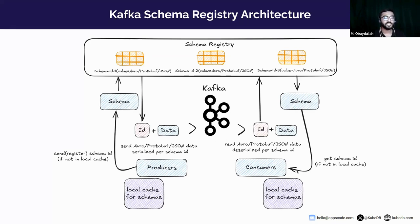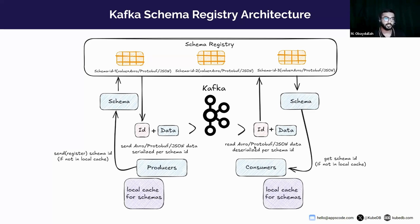The same schema will be looked up in the local cache. If it is found there, the local cache will return the schema directly. Otherwise, the consumer will search in the schema registry to check if the schema is available. If available, the consumer will deserialize the message with the schema — it can be Avro, Protobuf, or JSON type. If you try to consume the data with an invalid schema, the consumer will fail. This is how schema registry and Kafka work together.